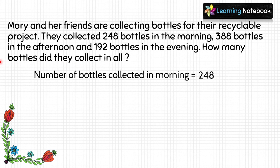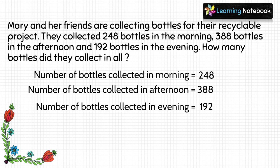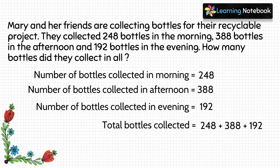Let's solve this word problem. Write the statements: number of bottles collected in the morning = 248, in the afternoon = 388, and in the evening = 192. The total number of bottles collected would be the sum of these three numbers.